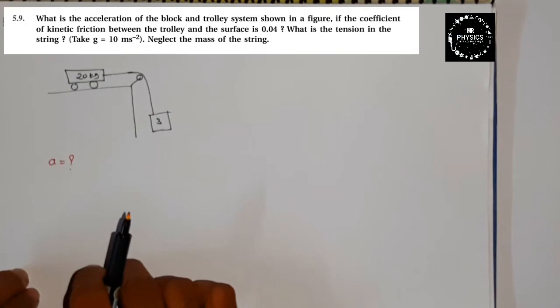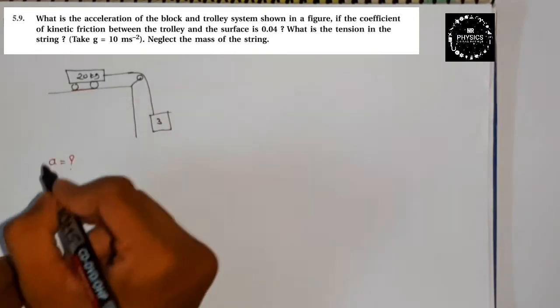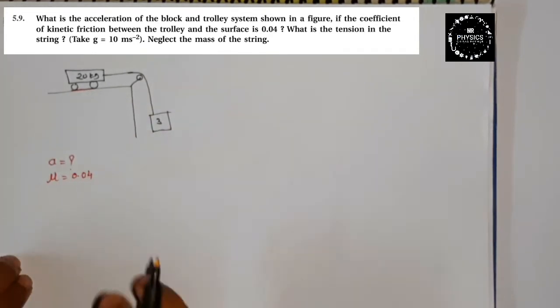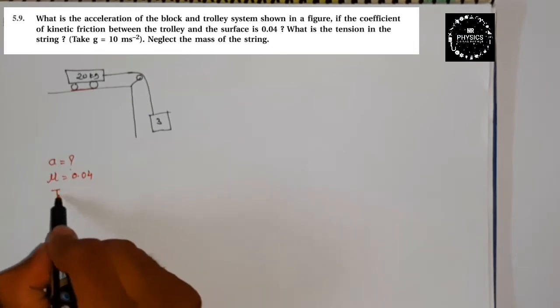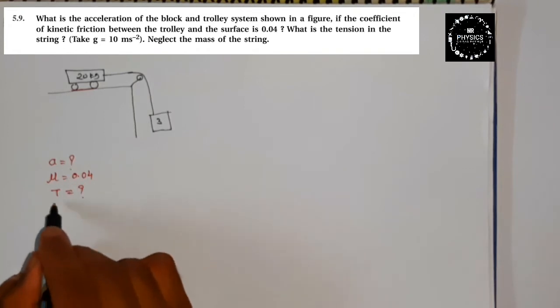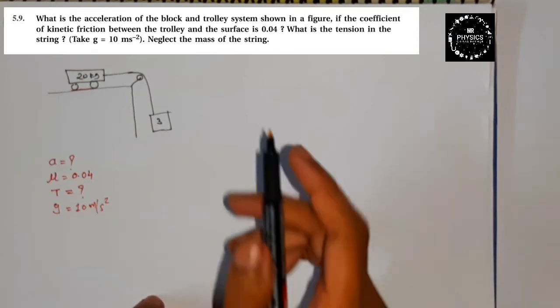If the coefficient of kinetic friction between the trolley and the surface, means yaha pe trolley and the surface ka jo coefficient diya mu, which is 0.04. What is the tension in the string? T is equal to question mark. And where g is equal to we should have to take what? 10 meter per second square.